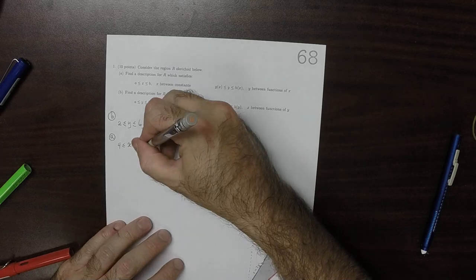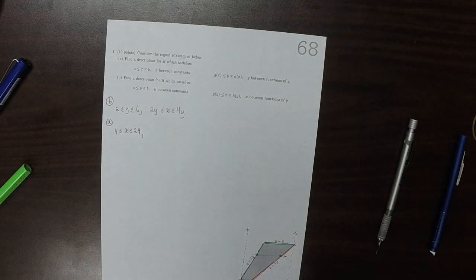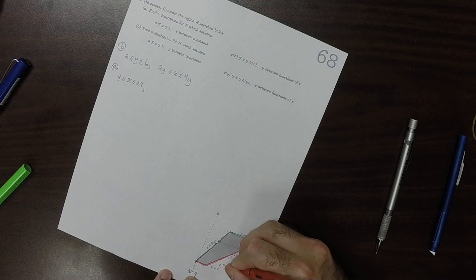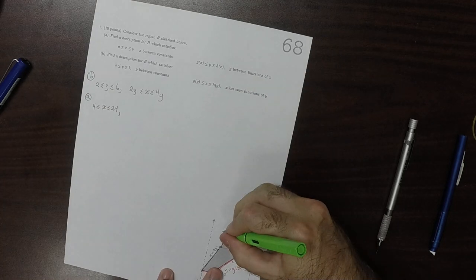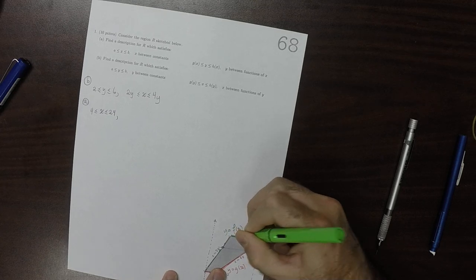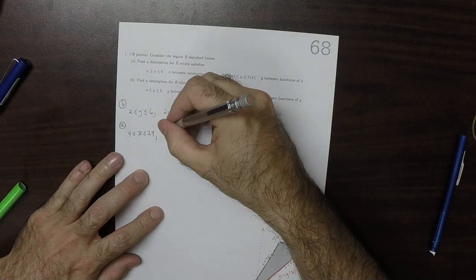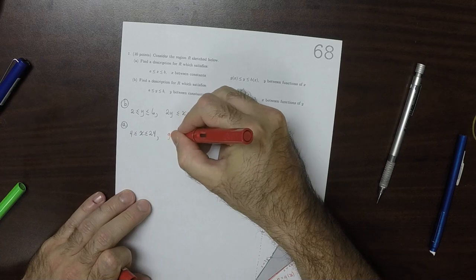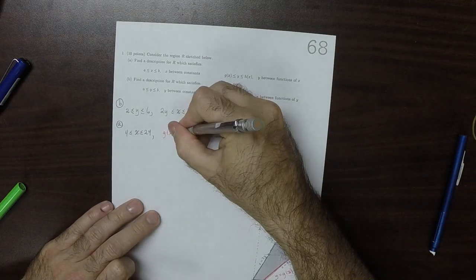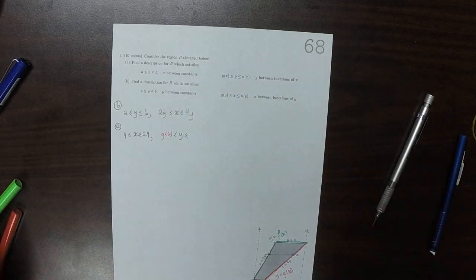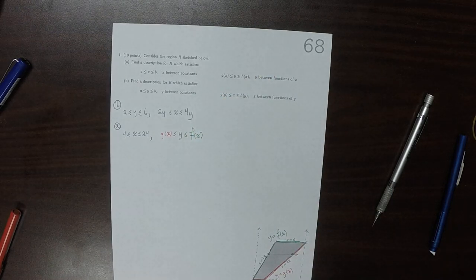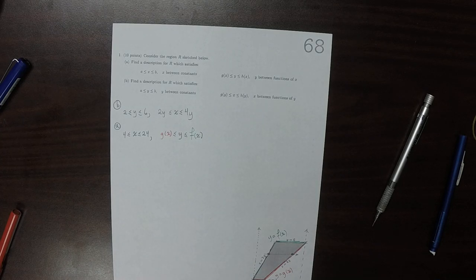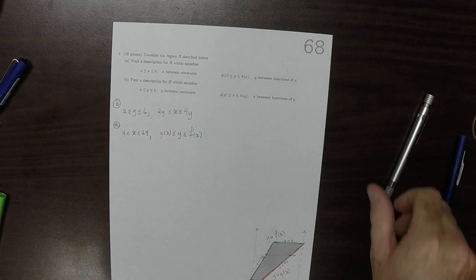Really, if we could name the red Y is G of X, if we could come up with a red function Y is G of X and a green function Y is F of X, then we could say that G of X is less than or equal to Y is less than or equal to F of X. However, this turned out to be, finding a formula for G of X and F of X turned out to be more complicated than I had imagined it to be.